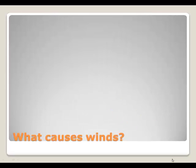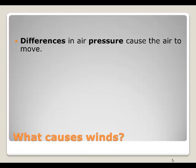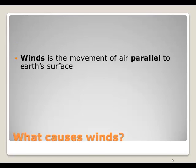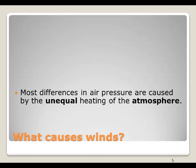Winds — what causes them? Air is a fluid, so it easily moves from place to place. Differences in air pressure cause that movement. Wind is the movement of air parallel to Earth's surface. Wind moves from areas of high pressure to areas of low pressure. Most differences in air pressure are caused by unequal heating of our atmosphere.